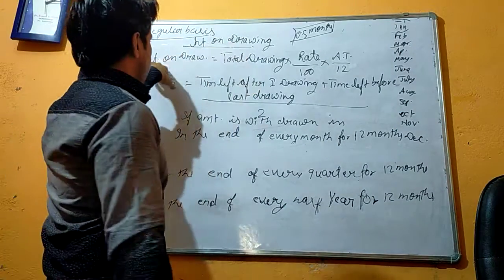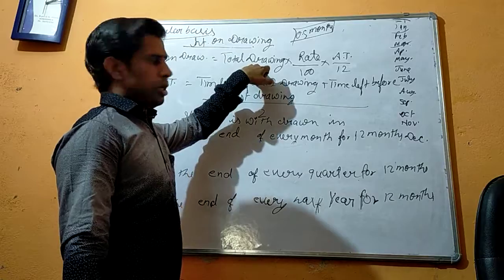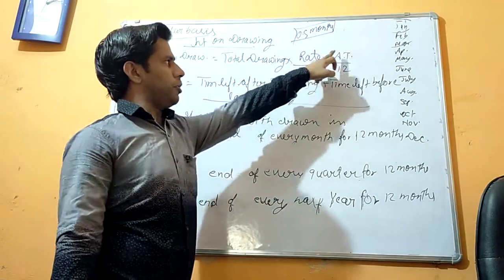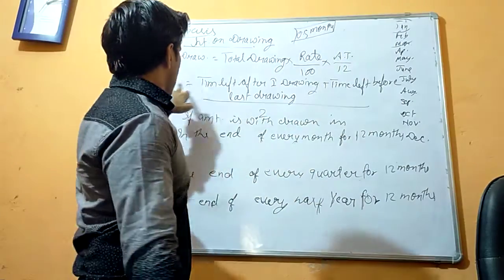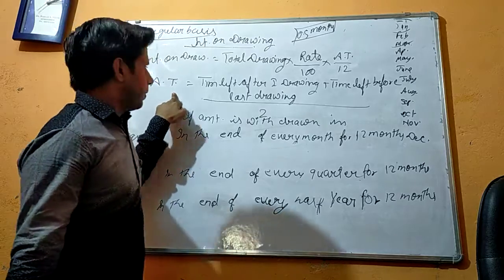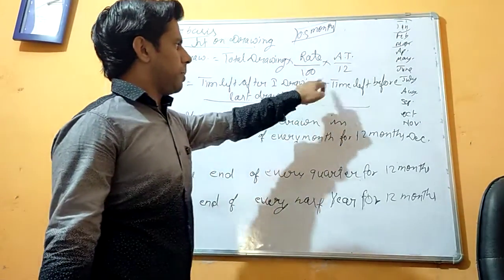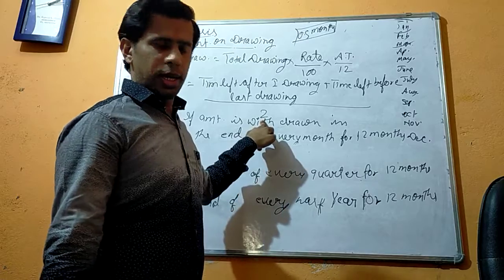We were learning about the interest on drawing. The formula for interest on drawing we have already learned: total drawing × rate/100 × average time/12. How should we calculate the time? Time left after first drawing plus time left before last drawing, divided by 2.